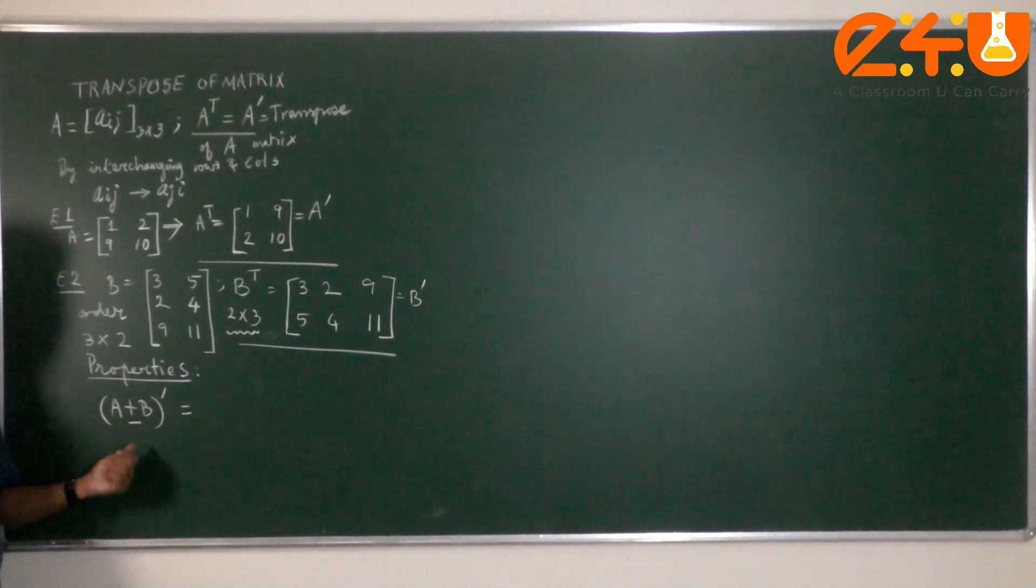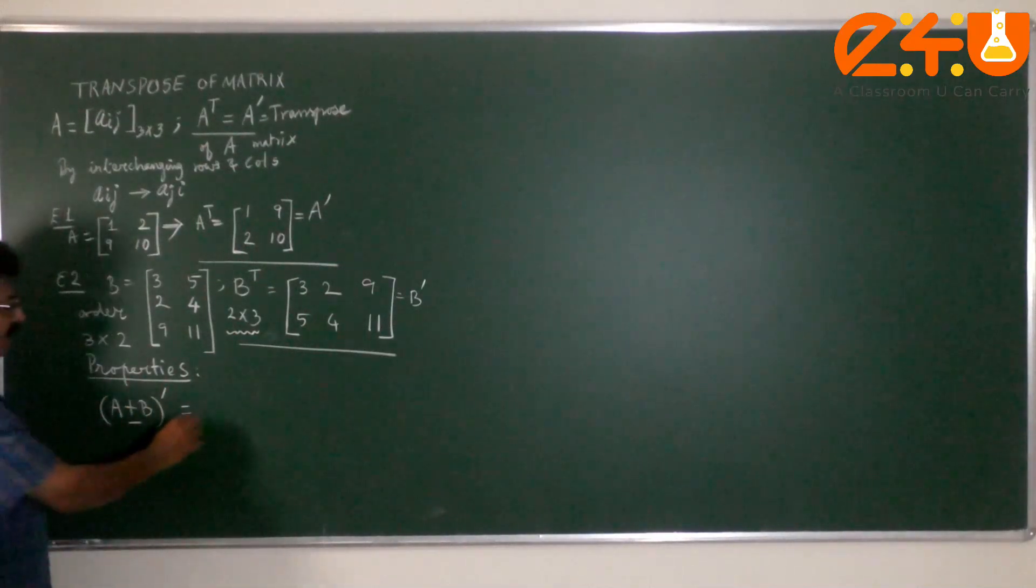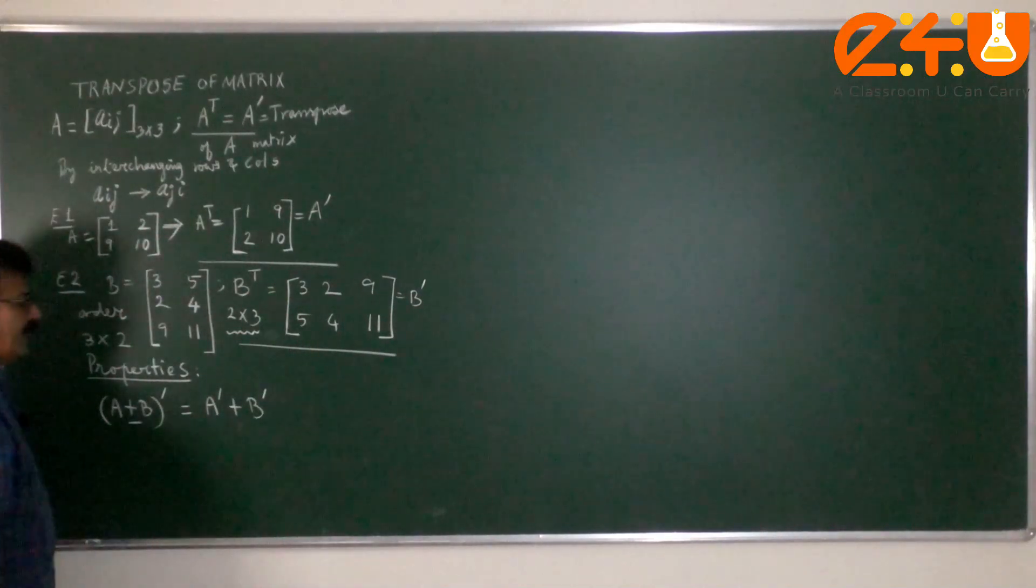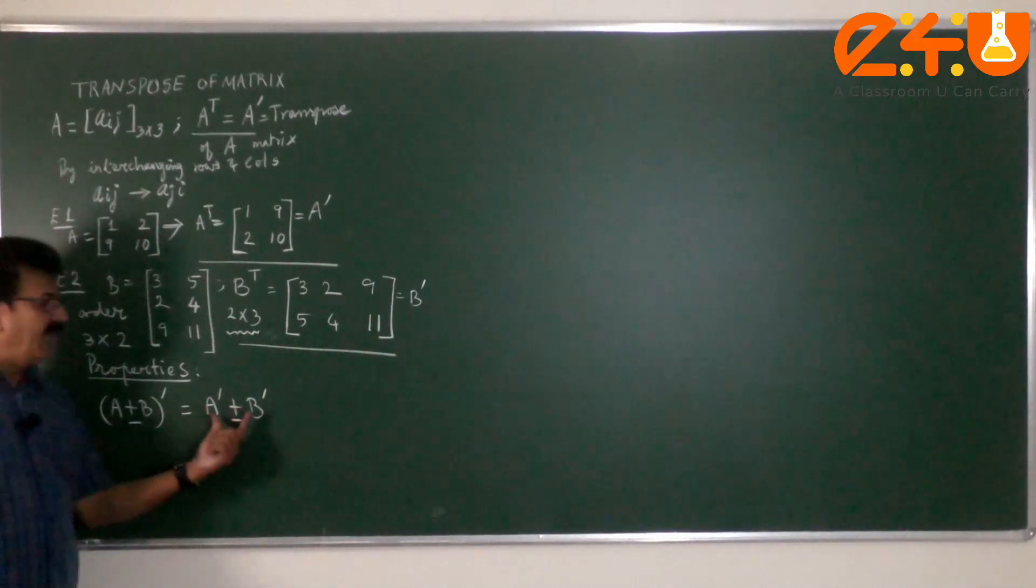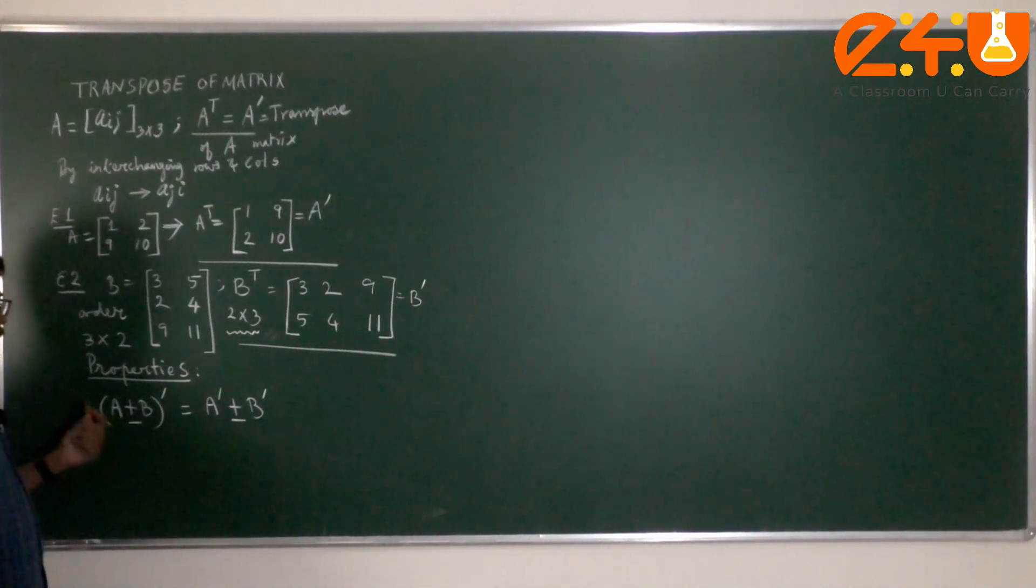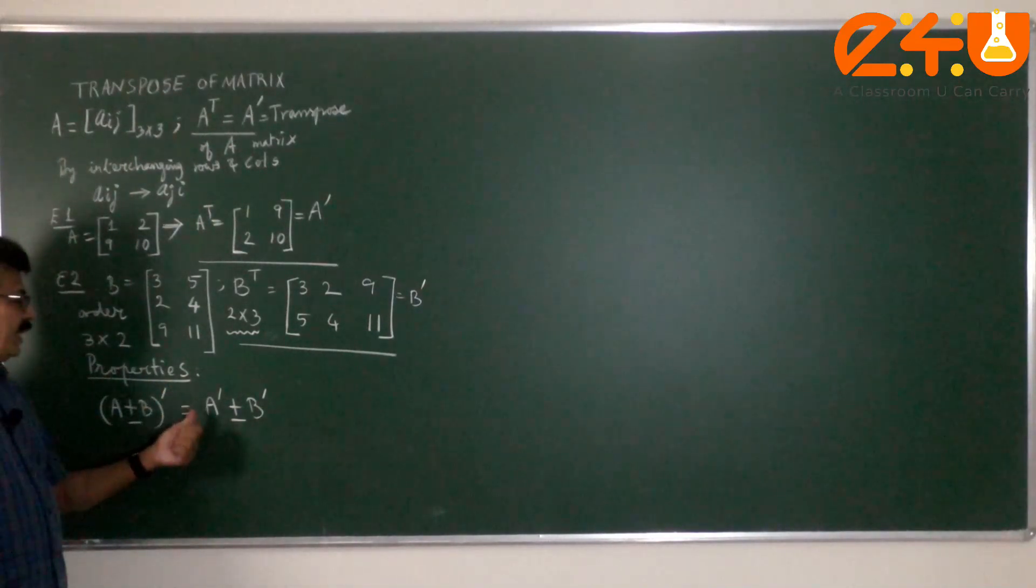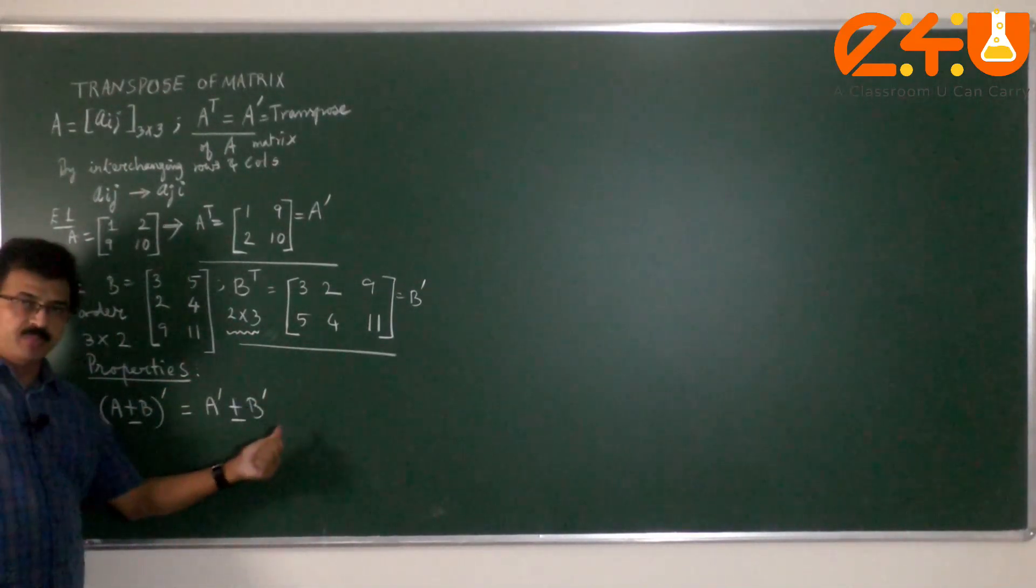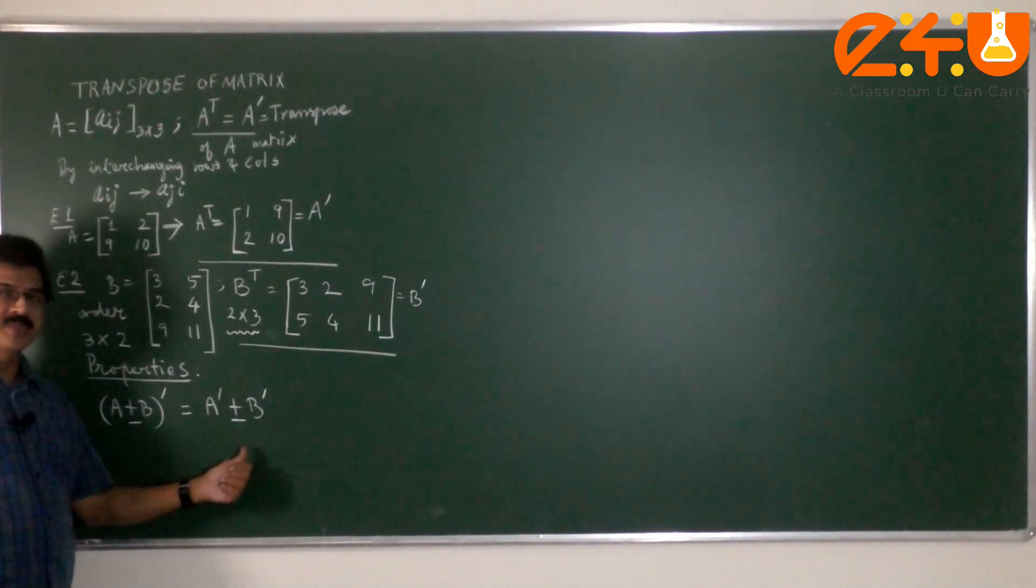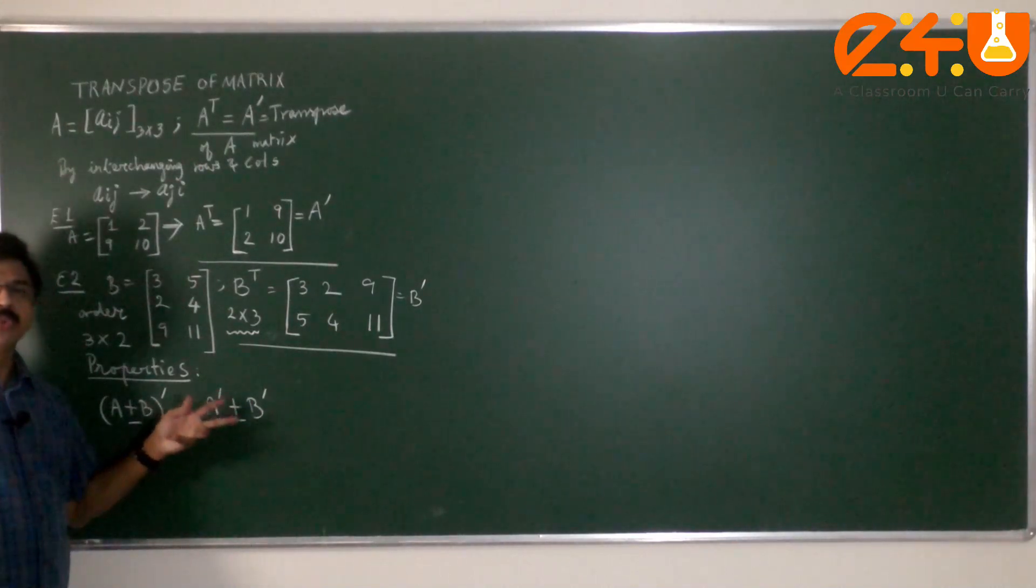Suppose I add two matrices and take the transpose of the sum. I can include plus or minus also. Whether you add or subtract, the transpose of the sum, transpose of the difference, it is same as sum of their individual transposes or difference of their transposes. A plus B whole transpose becomes A transpose plus B transpose. And A minus B whole transpose becomes A transpose minus B transpose.